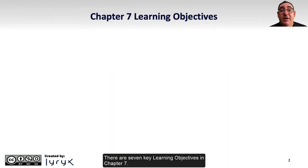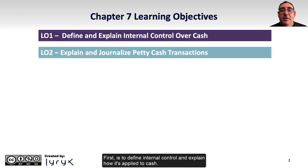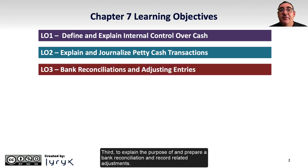There are seven key learning objectives in Chapter 7. First is to define internal control and explain how it's applied to cash. Second, to explain and journalize petty cash transactions. Third, to explain the purpose of and prepare a bank reconciliation and record related adjustments.